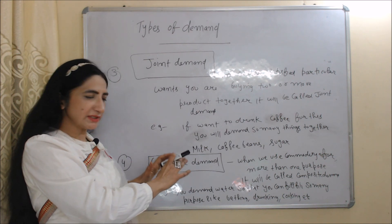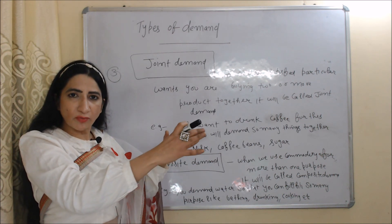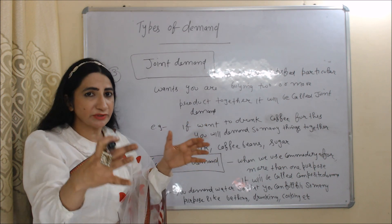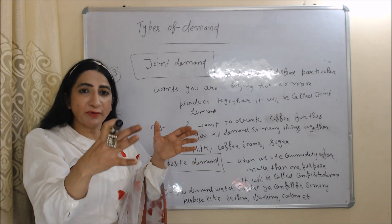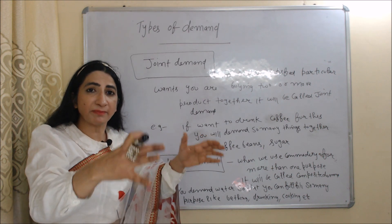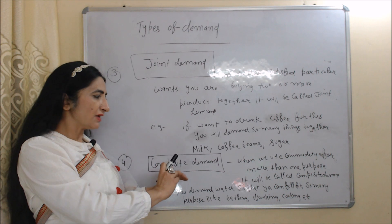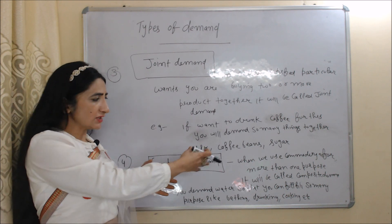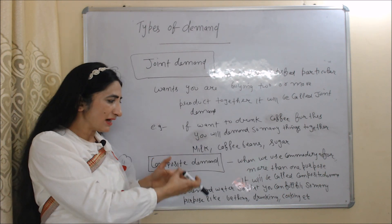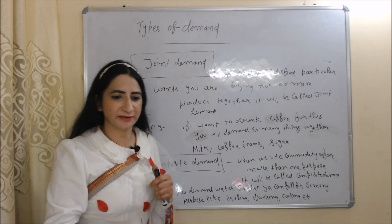Next is composite demand. Composite demand means when we use a commodity for more than one purpose, it will be called composite demand. For example, you demand water so that you can fulfill many purposes like bathing, drinking, and cooking. This will be called composite demand.